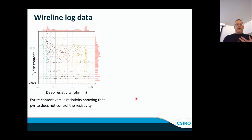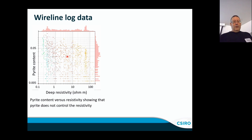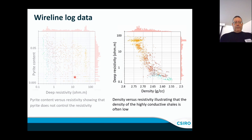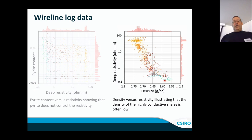The company wanted to understand why this area was so conductive. We started on the petrophysical side by looking at pyrite content from logs versus deep resistivity, coloured by TOC. The result was essentially a scatter plot — little relationship between pyrite and resistivity. However, we did see a reasonable relationship between deep resistivity and density. High-TOC samples (cyan) cluster at the lowest densities, as you'd expect.